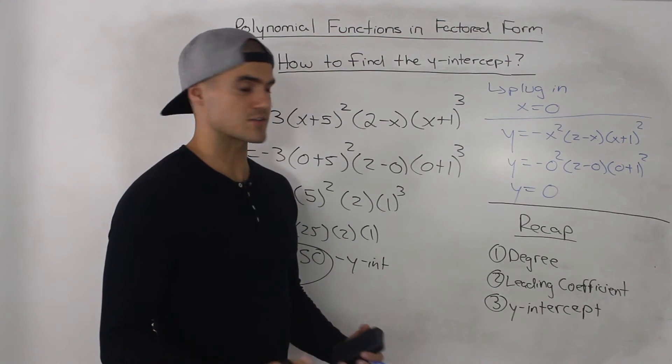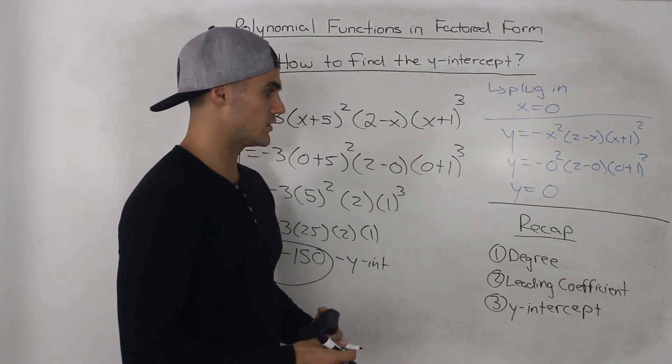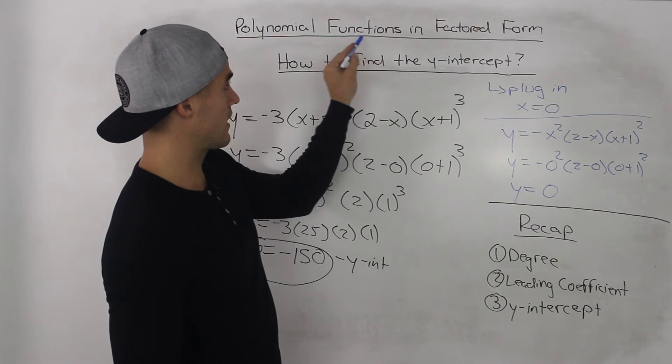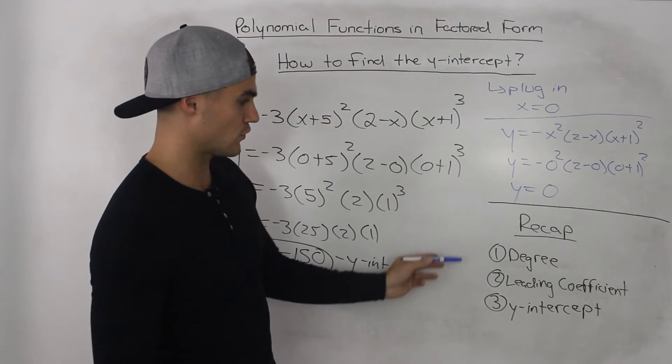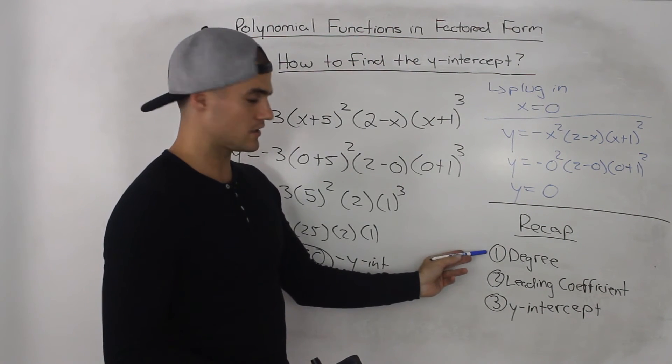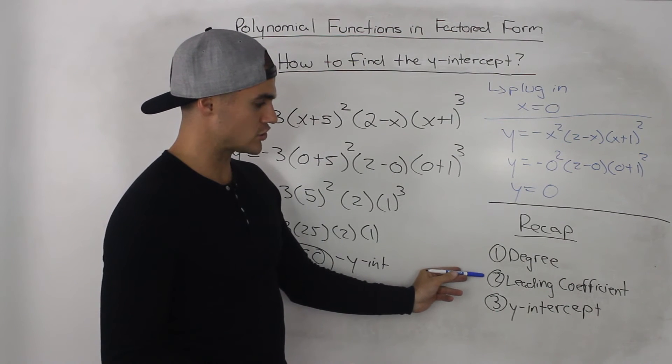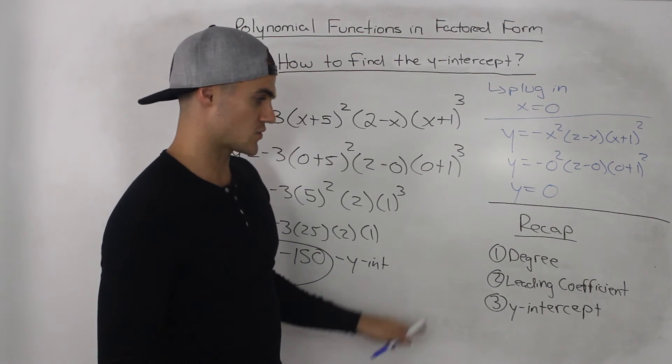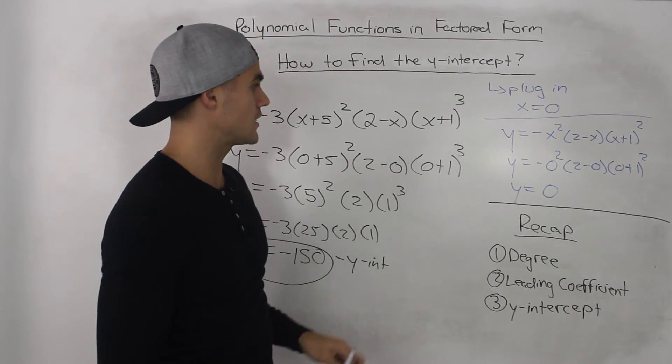So now as a recap of these last three videos that we did, what do we know how to find of a polynomial function that's in factored form? We know how to find the degree, we know how to find the leading coefficient, and we know how to find its y-intercept, what we just went over in this video.